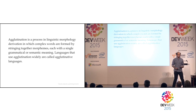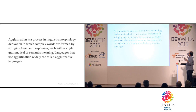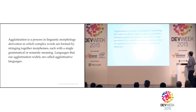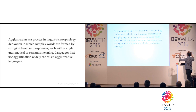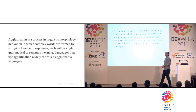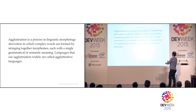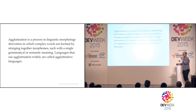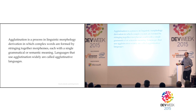So we've found a need for names and communication, but then we start overcompensating and our simplest model for creating names is to glue bits together. This is a process in linguistics called agglutination — complex words are formed by stringing together morphemes, each with a single grammatical or semantic meaning. Languages that use agglutination widely are called agglutinative languages. English has this a bit; all Germanic languages have it, but German has it in spades.